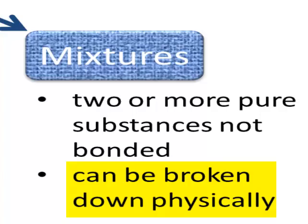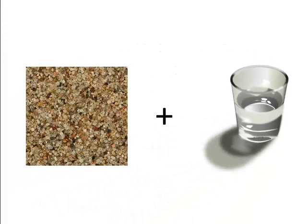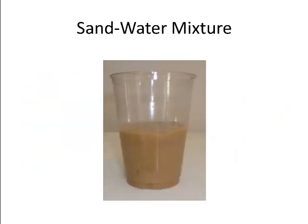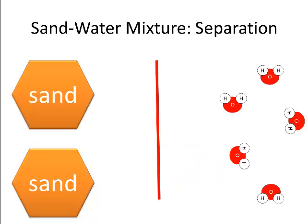In other words, we can break them back into their pure substances without breaking any bonds, just by moving the pure substances apart from one another. For example, maybe you have some sand and you have some water, and you put the sand and the water together and you stir. Now you have a mixture of sand and water, but the sand and the water are not bonded with one another, so it's actually quite easy to separate the sand from the water.